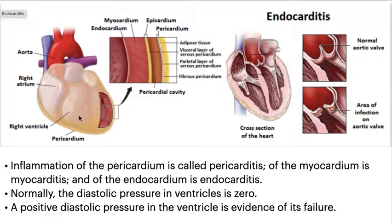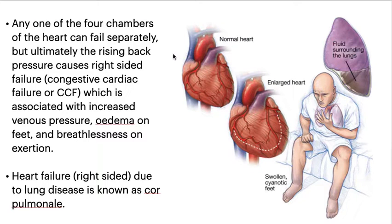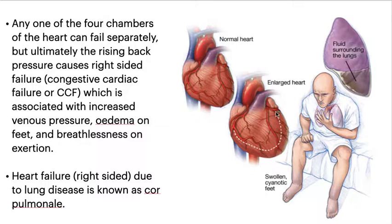Normally, the diastolic pressure in the ventricle is zero. A positive diastolic pressure in the ventricle is evidence of its failure. Any one of the four chambers of the heart can fail separately, but ultimately rising back pressure causes right-sided failure — that is, congestive cardiac failure — which is associated with raised venous pressure, edema of the feet, and breathlessness on exertion. Heart failure of the right side due to lung disease is known as cor pulmonale.